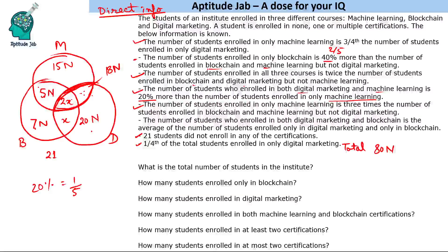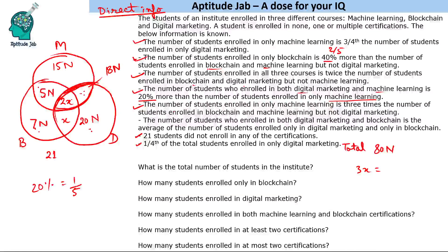The number of students enrolled in both Digital Marketing and Blockchain — which is 3x — equals the average of students enrolled only in Digital Marketing and only in Blockchain: average of 20n and 7n is 13.5n. So 3x equals 13.5n, giving x equals 4.5n.